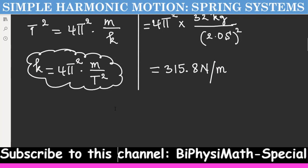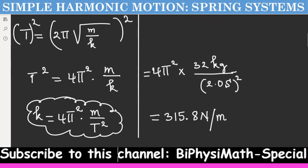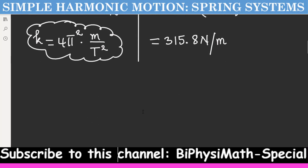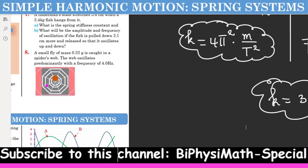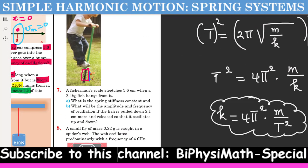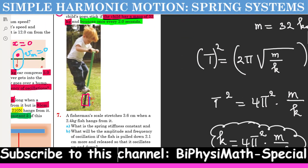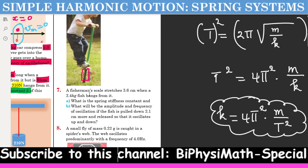The spring constant of our child's pogo stick is 315.8 N/m. This means the problem is solved. We had to find the constant of this child's pogo stick.